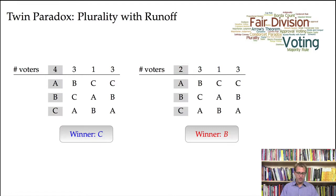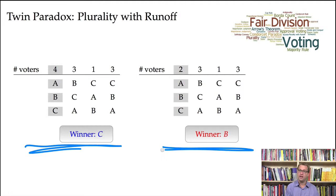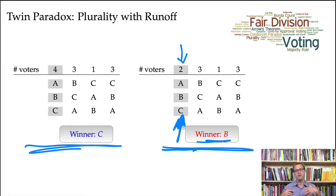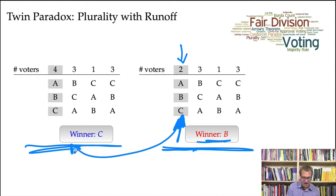This is counterintuitive because two voters in the first group have an incentive not to show up. You can also see this as a version of the twin paradox. Starting with the election on the right, only two people have the ranking A over B over C, and candidate B is declared the winner. Naturally, this group would want more people to share their ranking. But if they gather two more voters who agree with their ranking, candidate C is declared the winner. So the no-show paradox and the twin paradox are really two sides of the same coin — essentially the same phenomenon.